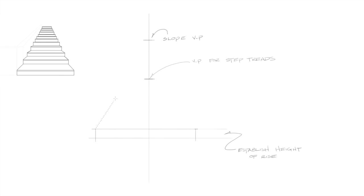Now we'll draw a line from each corner of the first step to the slope vanishing point. This will be the only time we'll use the slope vanishing point in this exercise.